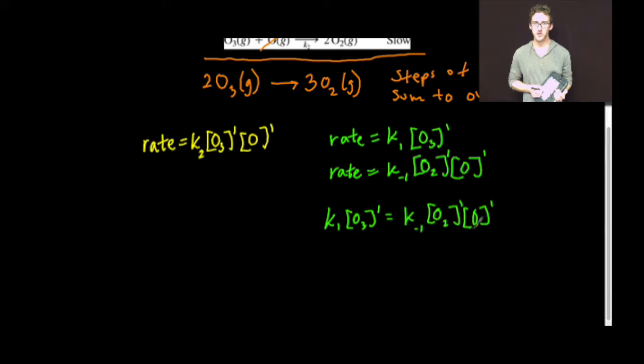Next, I'm going to solve this for the intermediate O. I'm going to divide each side by the rate constant of the reverse direction and the concentration of O2 to the first.